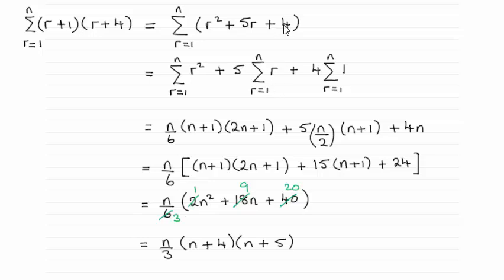And for 4 remember that you're doing 4 plus 4 plus 4 plus 4, n times over. So it's the same as 4 times the sum of 1 going from r equals 1 to n, which is going to be 4 times n as you can see here.